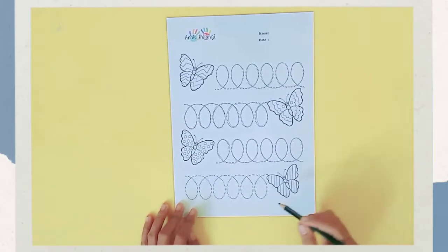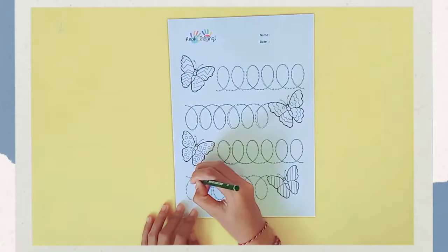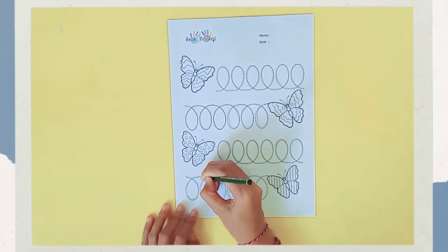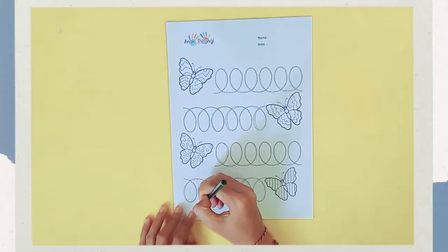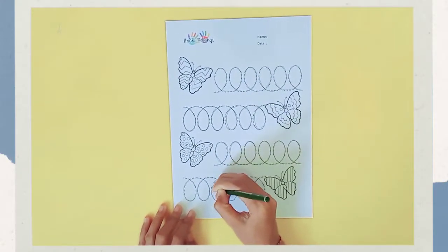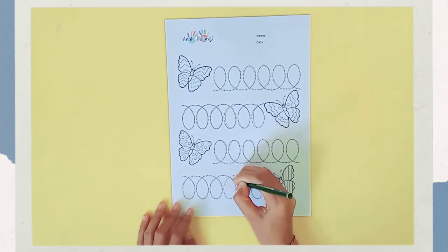Okay, and the last one, start from the top and make a loop. It looks like a roller coaster, right?